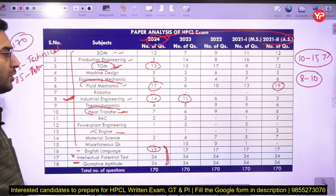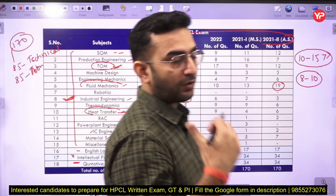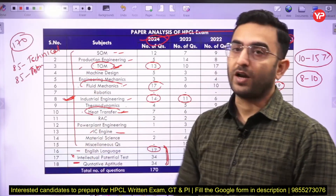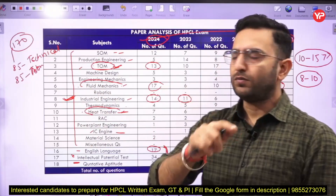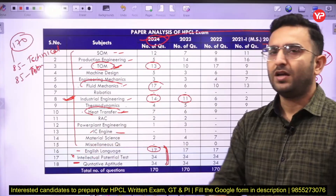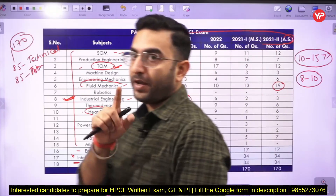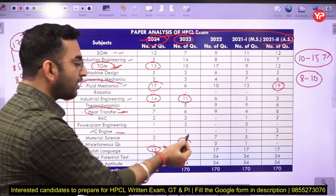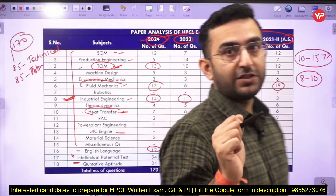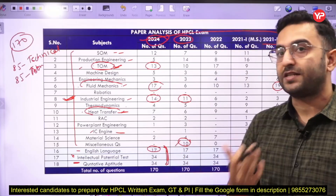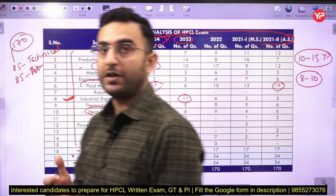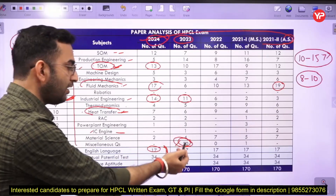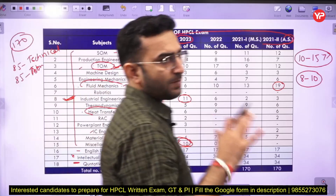So these are the most important subjects: strength of materials, production engineering, theory of machines, fluid mechanics, heat transfer, and thermodynamics — six to seven subjects that are very important. RAC and IC engines are not so important. You also need to make sure you cover current affairs, because in the 2023 exam, 10 questions were asked from miscellaneous topics related to current affairs — technological developments in the geomechanical engineering field, recent missile launches, and government policies related to the engineering sector.